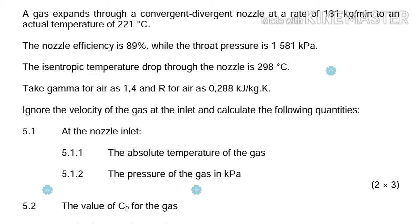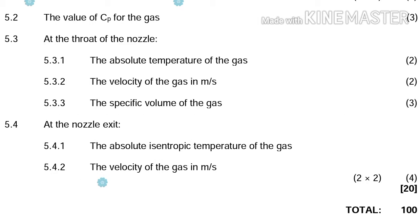At the nozzle inlet, we need to calculate: 5.1.1 the absolute temperature of the gas, and 5.1.2 the pressure of the gas in kPa. Then 5.2, the value of the specific heat capacity at constant pressure for the gas. Then 5.3, at the throat of the nozzle: the absolute temperature of the gas, the velocity of the gas in meters per second, and the specific volume of the gas. Then 5.4, at the nozzle exit: the absolute isentropic temperature of the gas, and the velocity of the gas in meters per second.